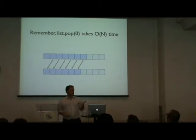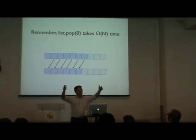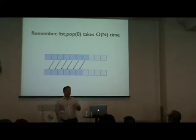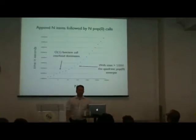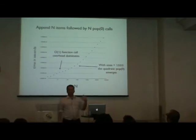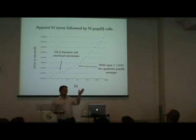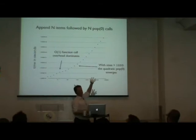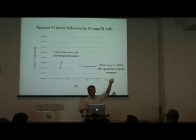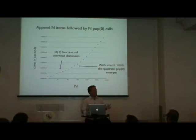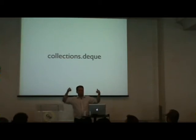Unfortunately, popping from the beginning of a list means shifting everything over by one, which is O(n) per operation. For large lists — more than about a thousand items — you get quadratic overhead. When you double the size, it takes four times as long. When you want to push on one end and pop off the other, that's when you use the deque module.